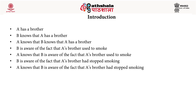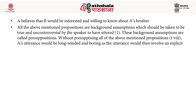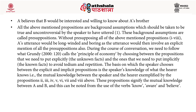(4) B is aware that A's brother used to smoke; (5) A knows that B is aware that A's brother used to smoke; (6) B is aware that A's brother had stopped smoking; (7) A knows that B is aware that A's brother had stopped smoking; (8) A believes that B would be interested and willing to know about A's brother. All these propositions are background assumptions which are taken to be true and uncontroversial by the speaker. These background assumptions are called presuppositions.